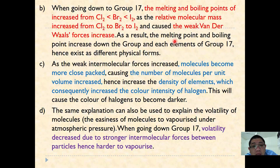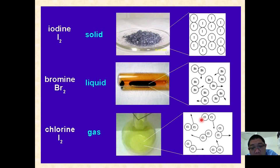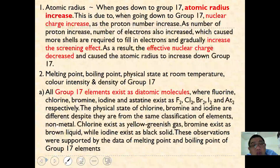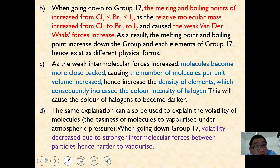When discussing weak intermolecular forces, we can also consider packing density. Per unit volume, iodine molecules are very closely packed, bromine is slightly looser, and chlorine is very loose. This causes not only density to increase going down the group, but also color intensity to increase — that is why the color becomes darker and darker as we go down the group.